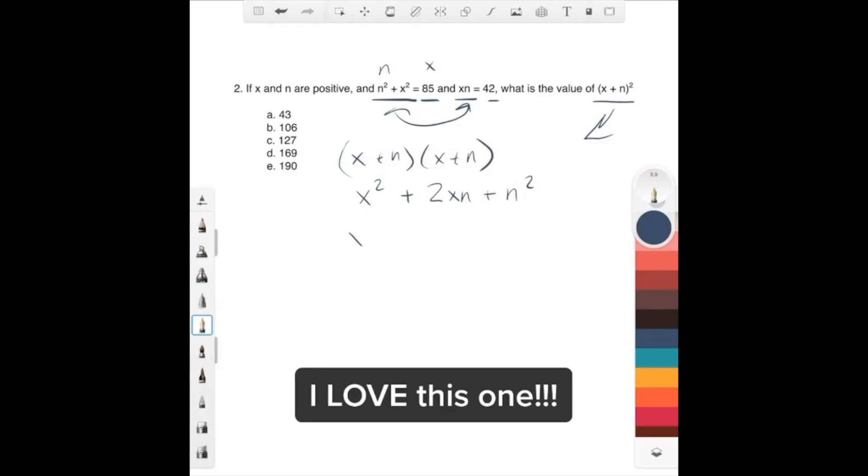You can rewrite this as x squared plus n squared plus 2xn. It's the same thing, all I did was rearrange the terms. Well, x squared plus n squared, n squared plus x squared is what? 85.